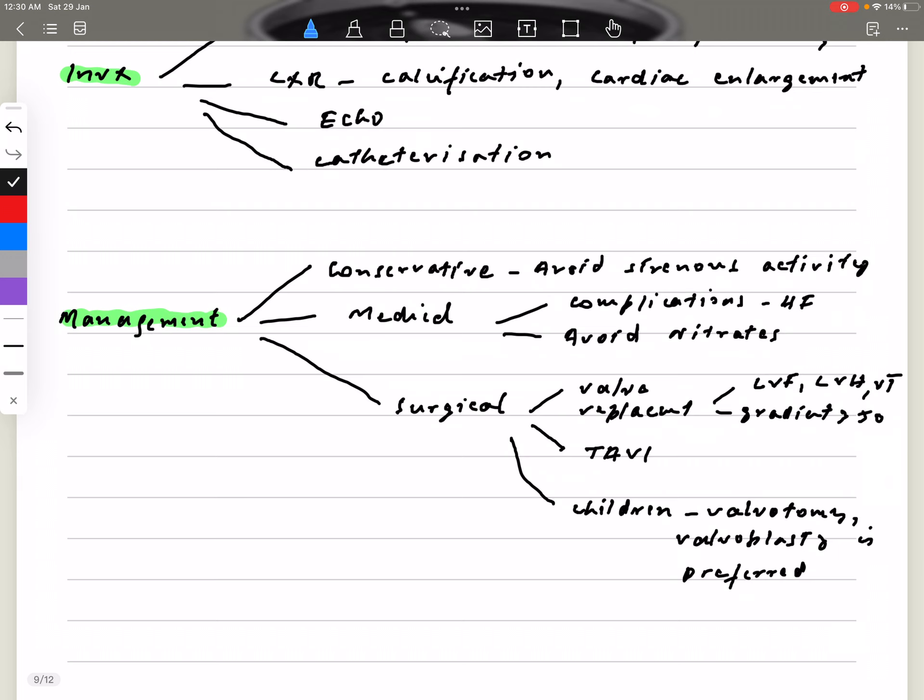So coming to the last part, the examiner may ask you how you'll manage the patient. Remember, we will divide into three groups: conservative, medical, and surgical. Conservative is mainly just for observation, but we're going to tell the patient to avoid strenuous activity.